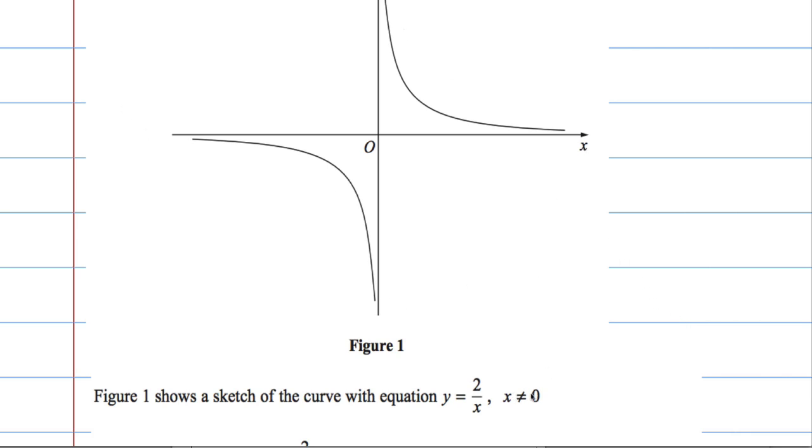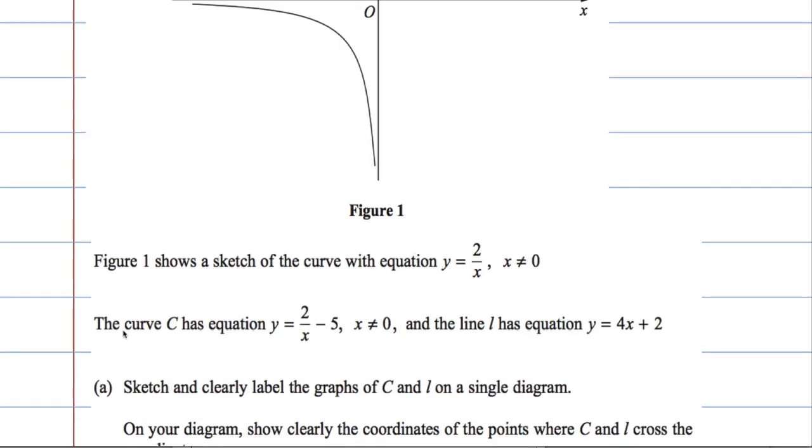It tells us that x cannot be equal to 0. That's because we'd end up dividing by 0. So one of the asymptotes is x equals 0, which is our y-axis. And we're told that the curve C has equation y equals 2 over x minus 5, where x is not equal to 0. And the line L has the equation y equals 4x plus 2.